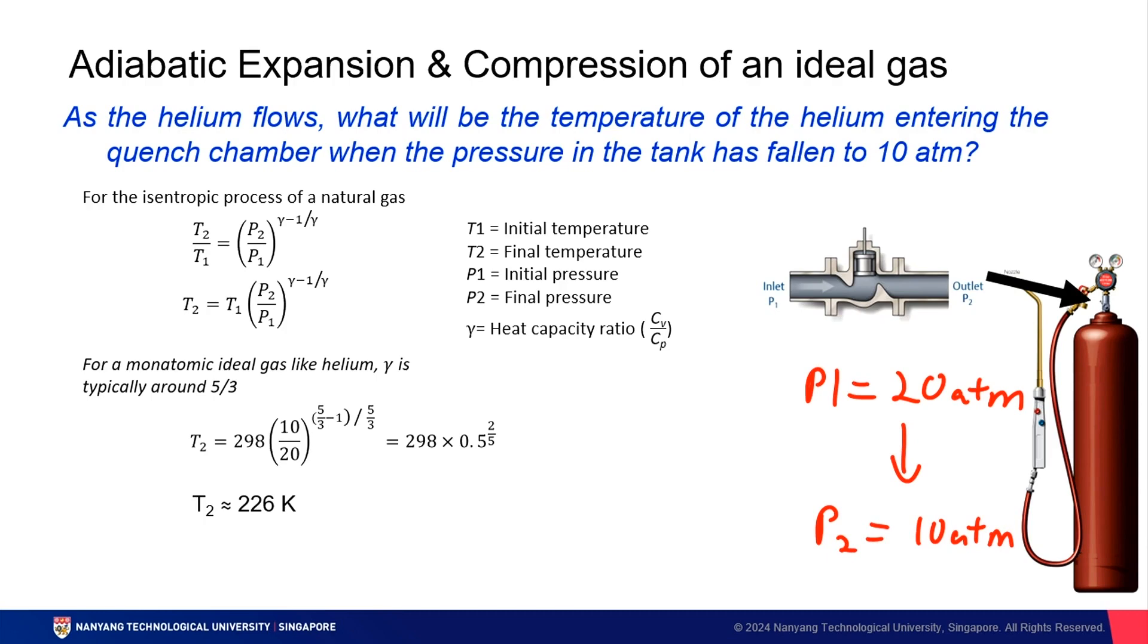To solve this problem, we can use the formula for the isentropic process of a natural gas. Since we are looking for the final temperature, we can simplify the equation as this. From here on out, it's just about plugging in the values. For a monoatomic ideal gas like helium, gamma is typically around 5 over 3. And the initial temperature, temperature T1 is 298 Kelvin, which is about 25 degrees Celsius.